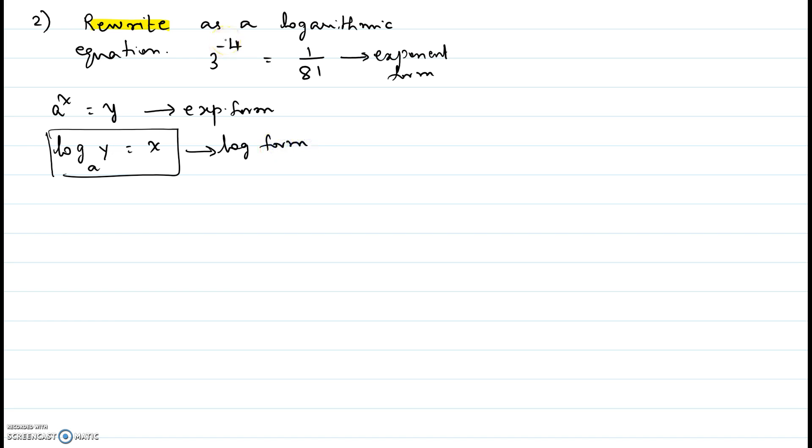So here the exponent is negative 4, base is 3. So when we write in the log form, it is log of 1 over 81 to the base 3 equal to negative 4.